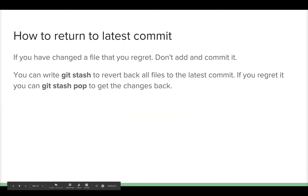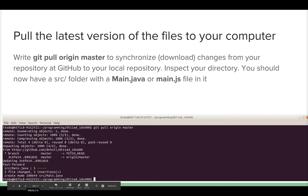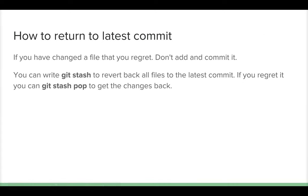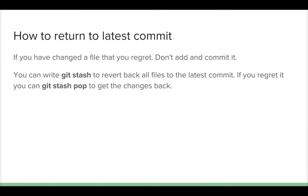Now you know how to push and pull things to and from GitHub. If you have changes you really don't like, don't add and commit them — instead write 'git stash' to revert all files back to the latest commit. If you regret that, write 'git stash pop' to get those changes back.